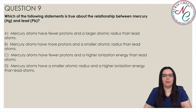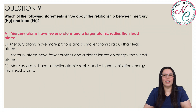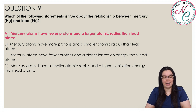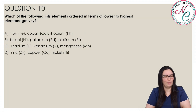Which of the following statements is true about the relationship between Mercury and Lead? Is it A: Mercury atoms have fewer protons and a larger atomic radius than Lead atoms? B: Mercury atoms have more protons and a smaller atomic radius than Lead atoms? C: Mercury atoms have fewer protons and a higher ionization energy than Lead atoms? Or D: Mercury atoms have a smaller atomic radius and a higher ionization energy than Lead atoms? And the correct answer is A. Mercury atoms have fewer protons and a larger atomic radius than Lead atoms. Mercury has an atomic number of 80 while Lead has an atomic number of 82, so Mercury has fewer protons than Lead. Mercury is located to the left of Lead on the sixth row of the table, so its atoms have a larger atomic radius than Lead atoms.